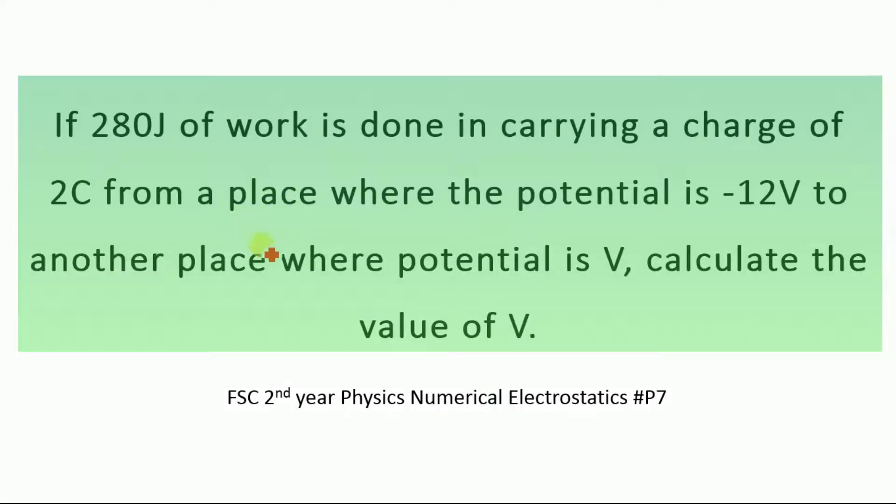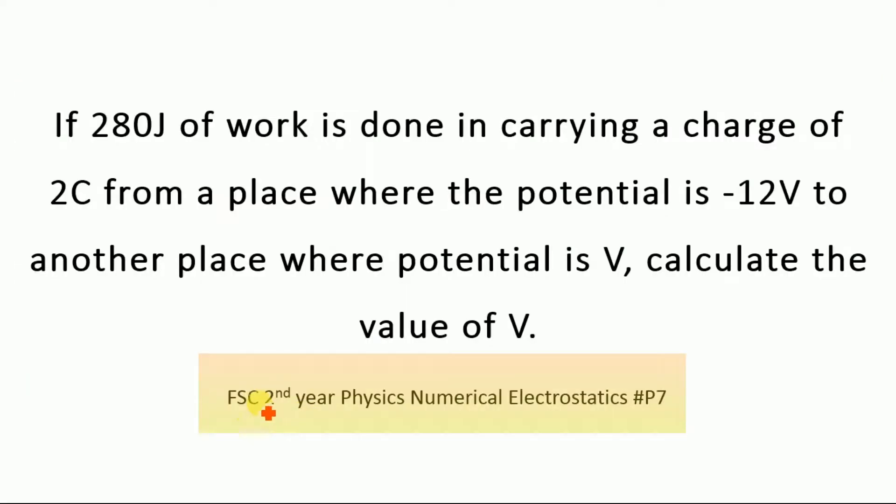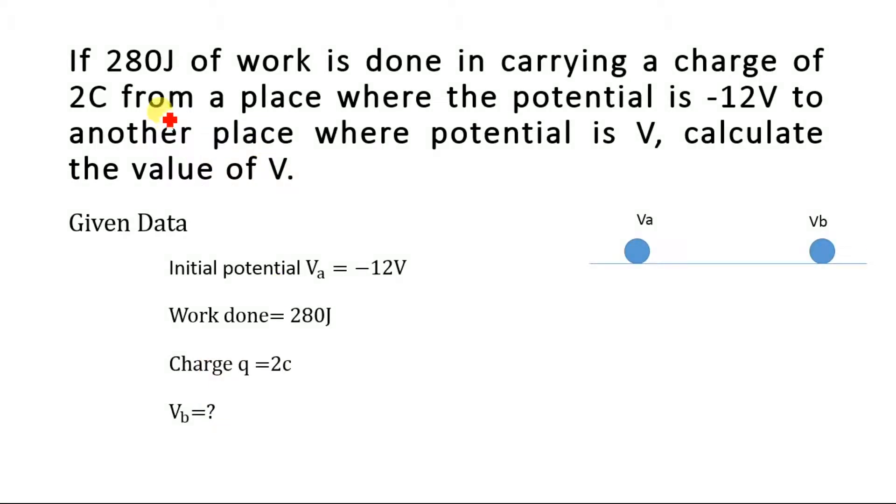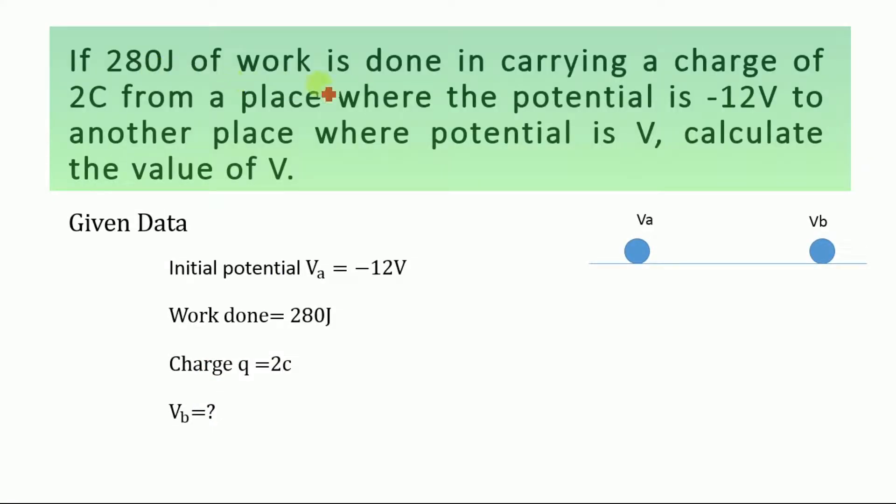Today we are going to solve this numerical from the FSC Secondary Physics book. The numerical is: If 280 Joules of work is done in carrying a charge of 2 coulombs from a place where the potential is minus 12 volts to another place where the potential is V, calculate the value of V.